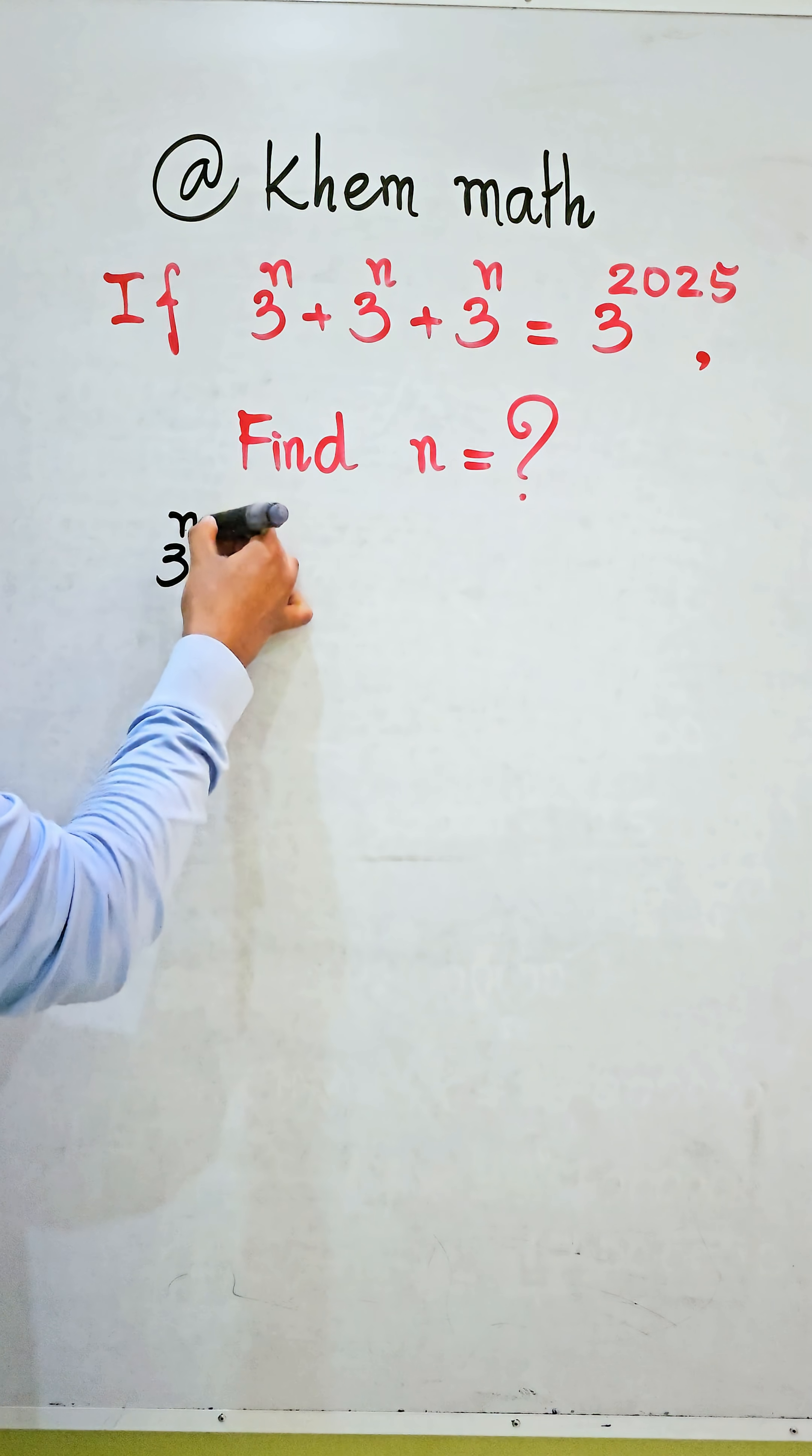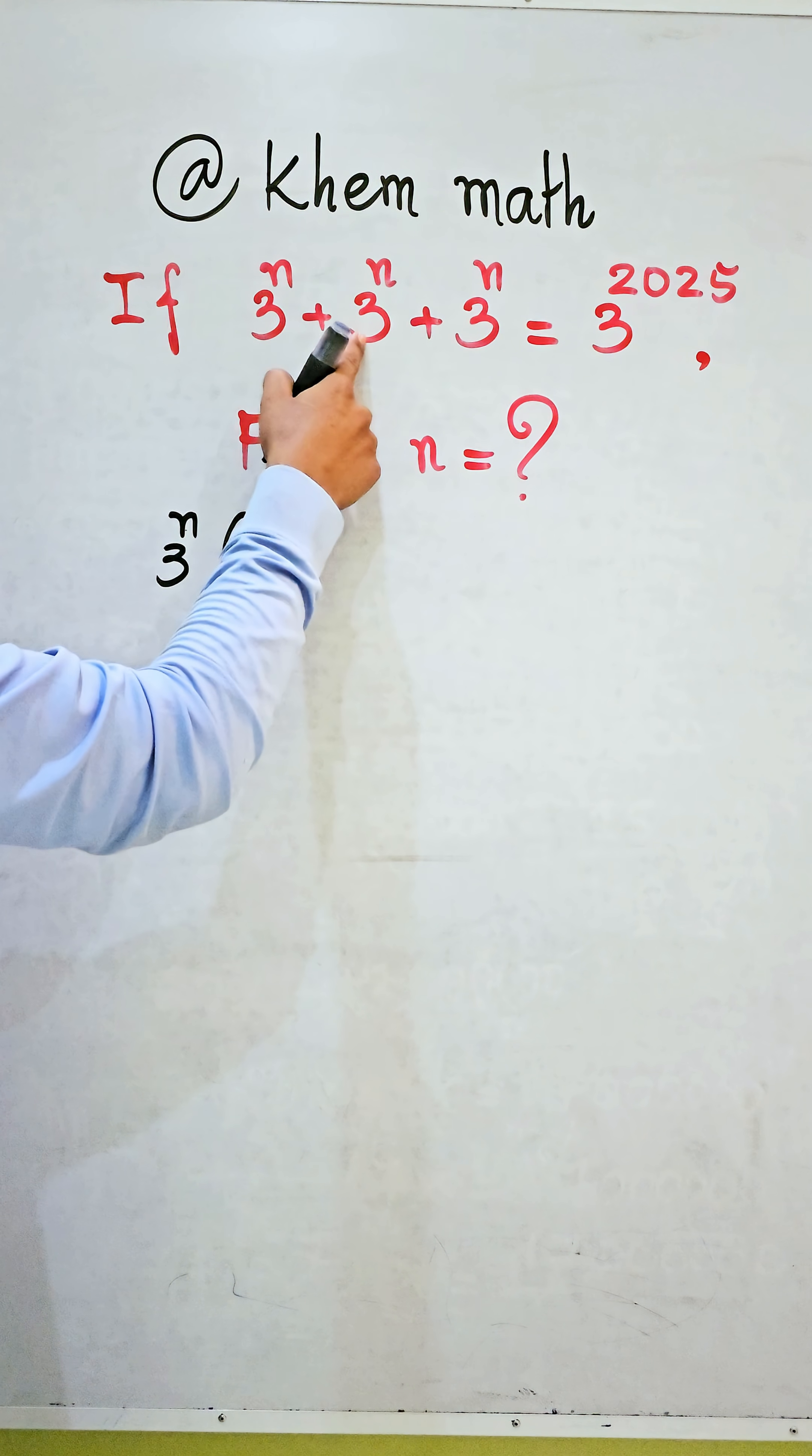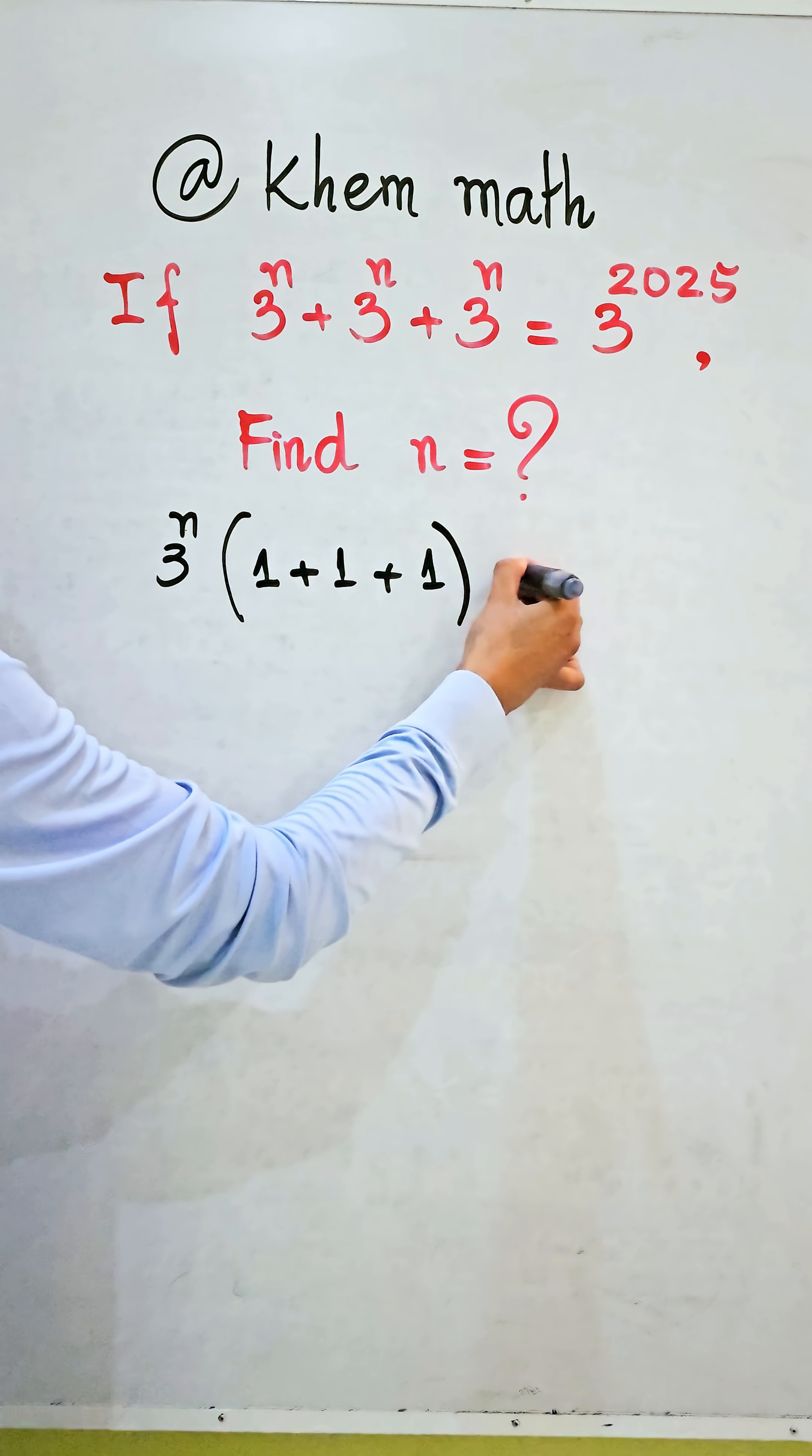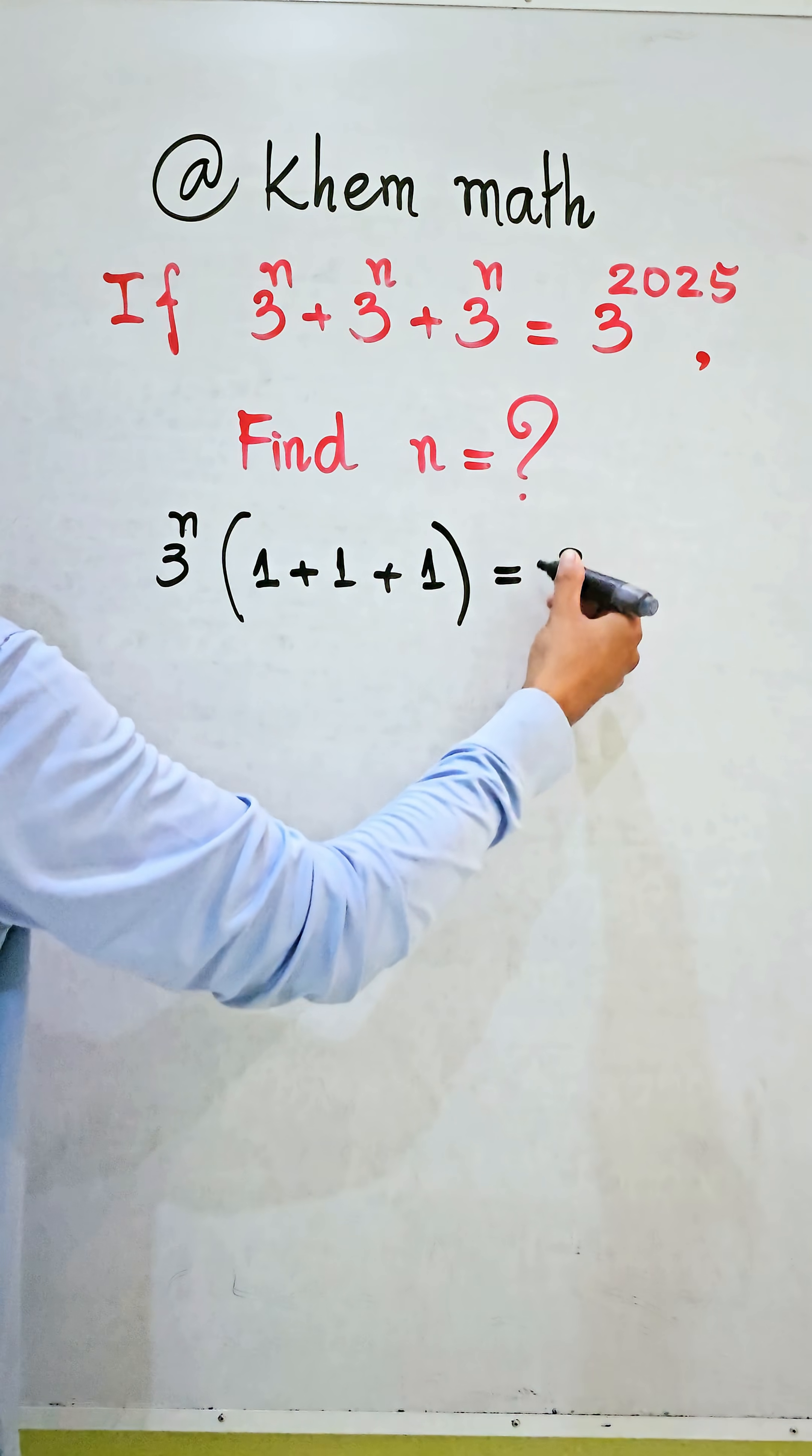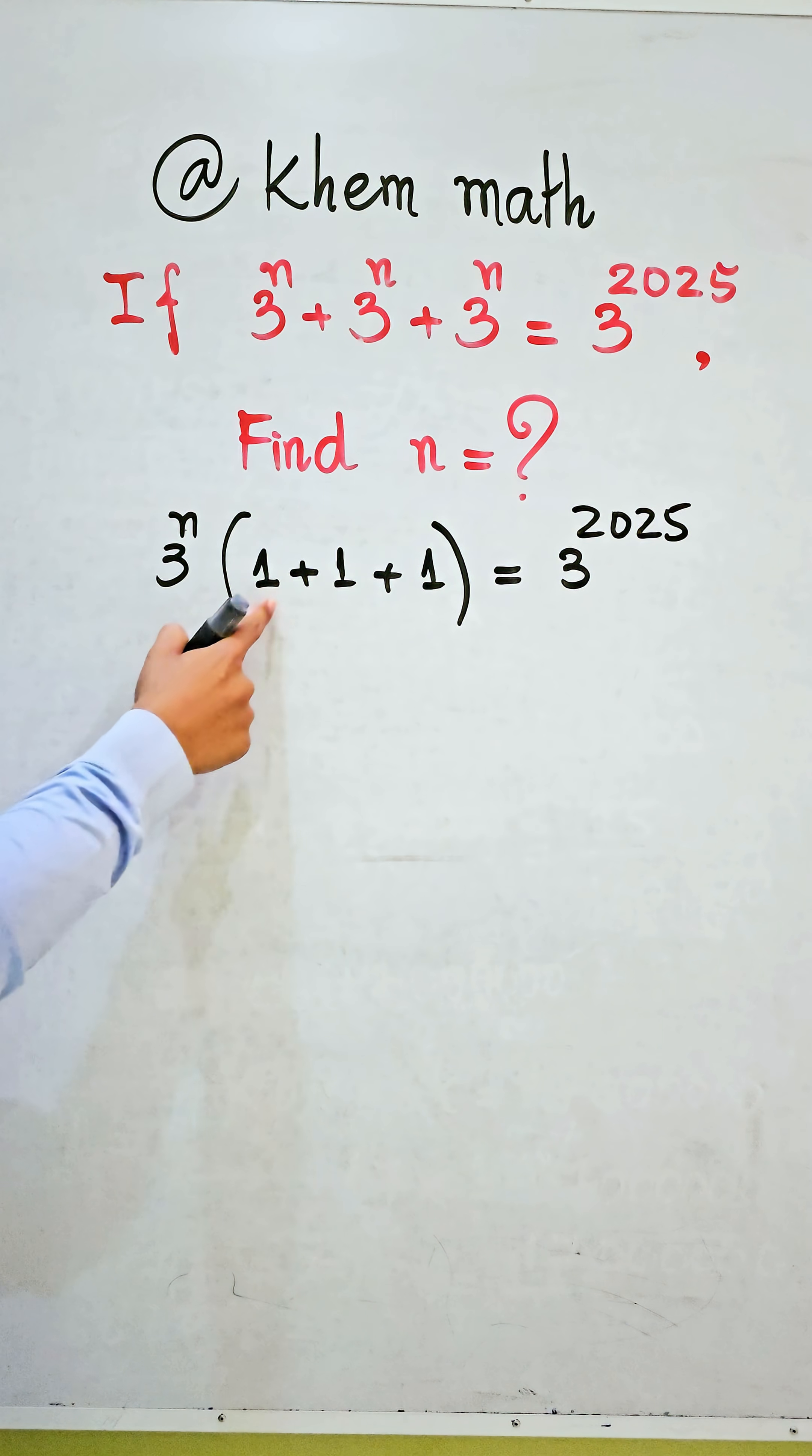We get 3 power n times 1 plus 1 plus 1 equals 3 power 2025. Since 1 plus 1 plus 1 equals 3, we get 3 power n times 3 equals 3 power 2025.